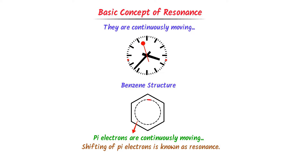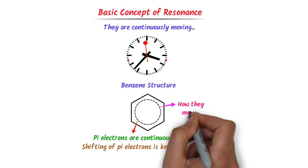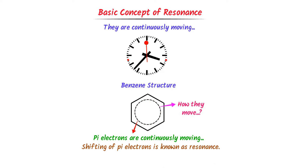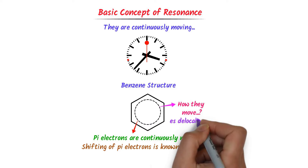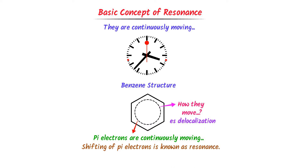So, resonance is the possibility of shifting pi electrons inside a molecule. Now, here is one important question: how do these pi electrons move inside the benzene ring? Well, the simple answer is it is due to electron delocalization in pi bonds.